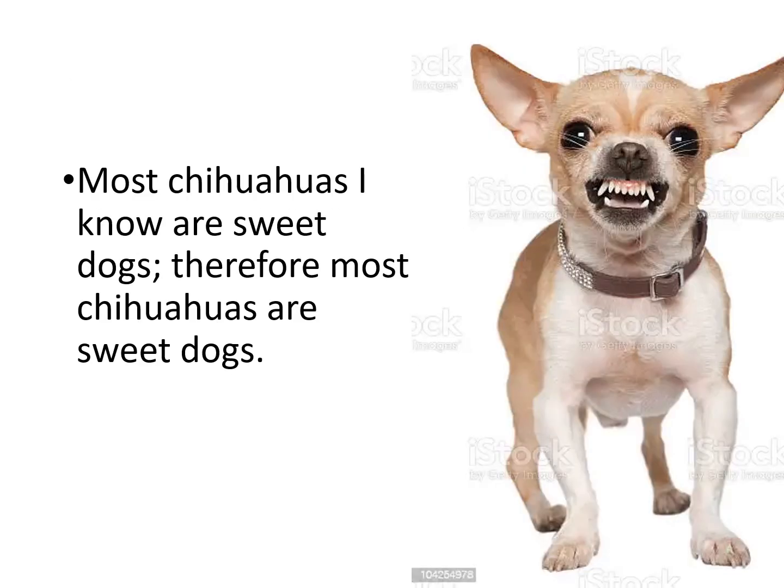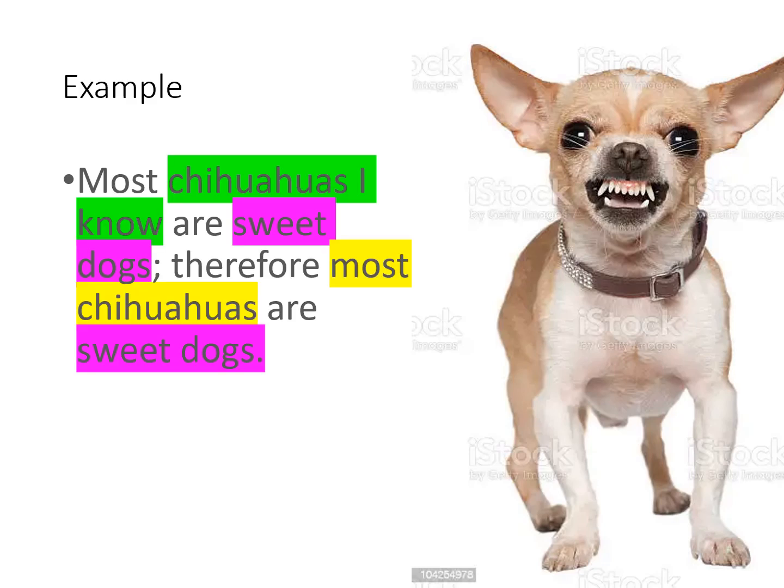Let's consider an example. Suppose you hear: most chihuahuas I know are sweet dogs — therefore, most chihuahuas are sweet dogs. The first thing you have to do is identify the conclusion and then identify the premise. Then you have to ask yourself: what exactly is the sample? What is the target group? What is the relevant property? Take a moment and pause the video to identify those things on your own. The conclusion comes after 'therefore,' so the conclusion is: most chihuahuas are sweet dogs. The premise is what comes before — most chihuahuas I know are sweet dogs.